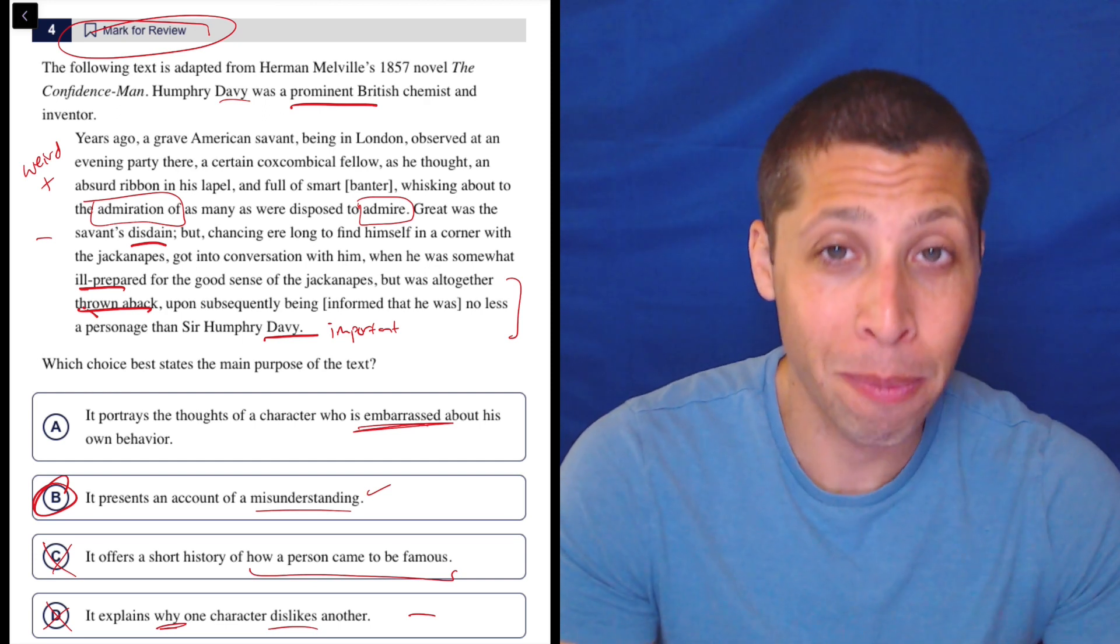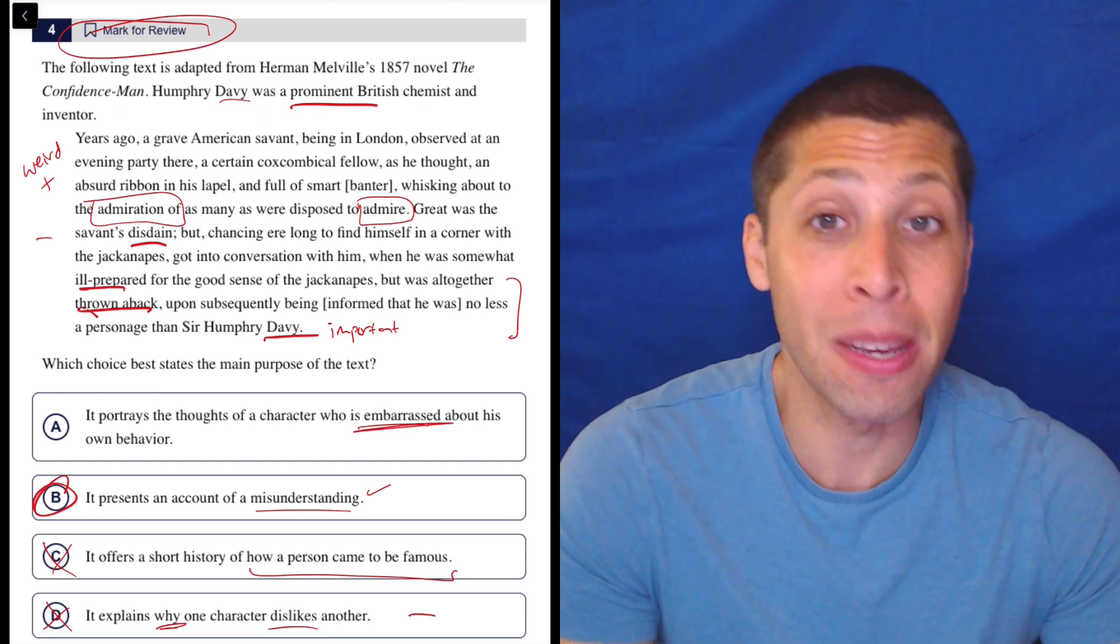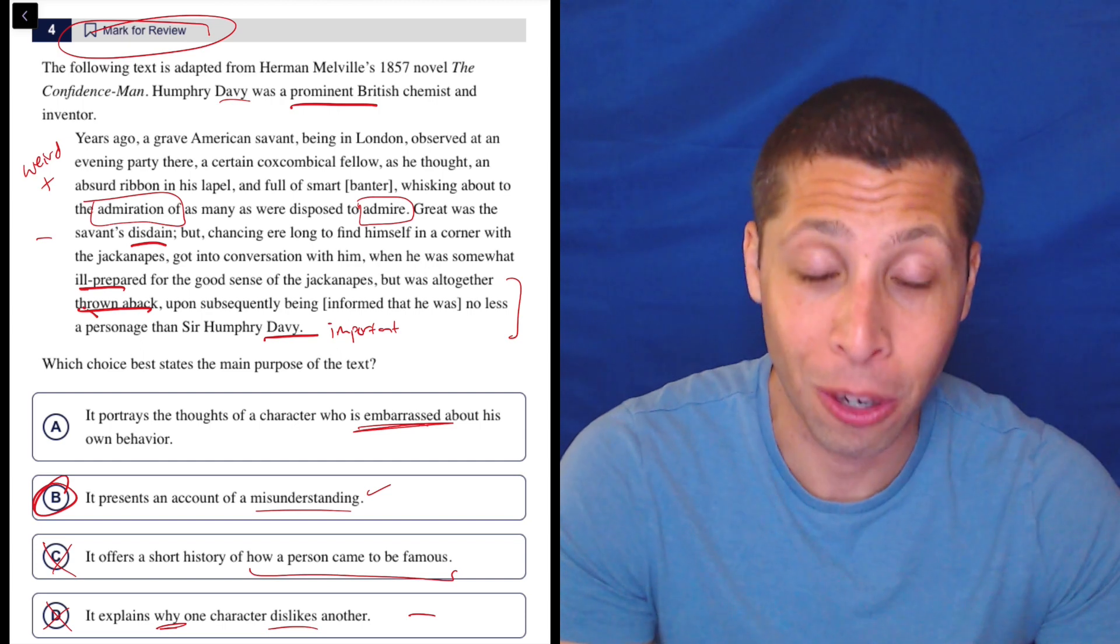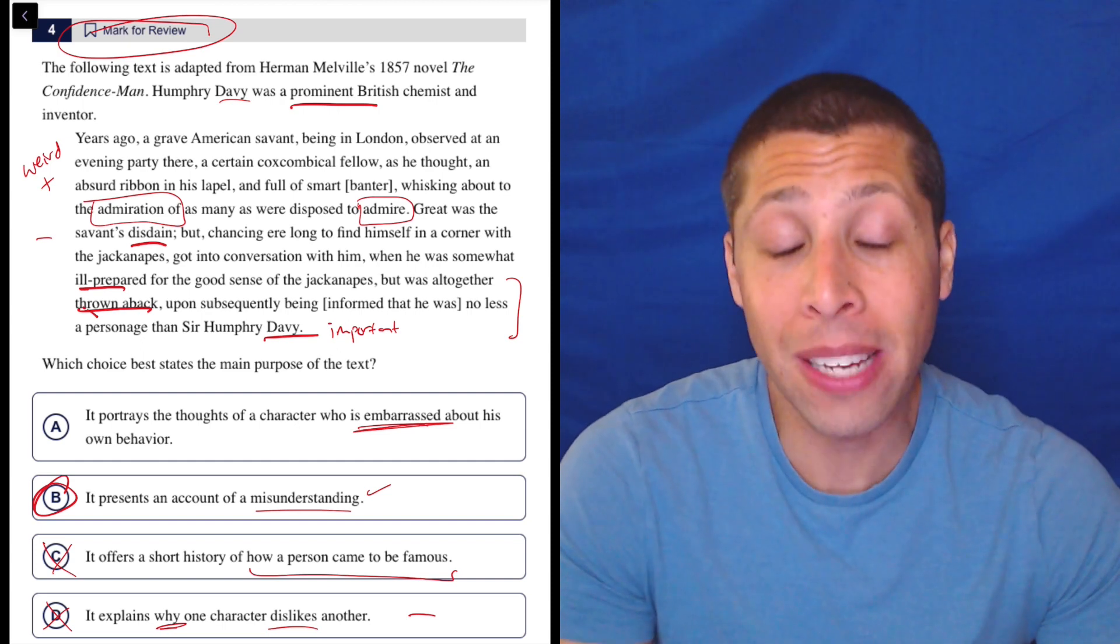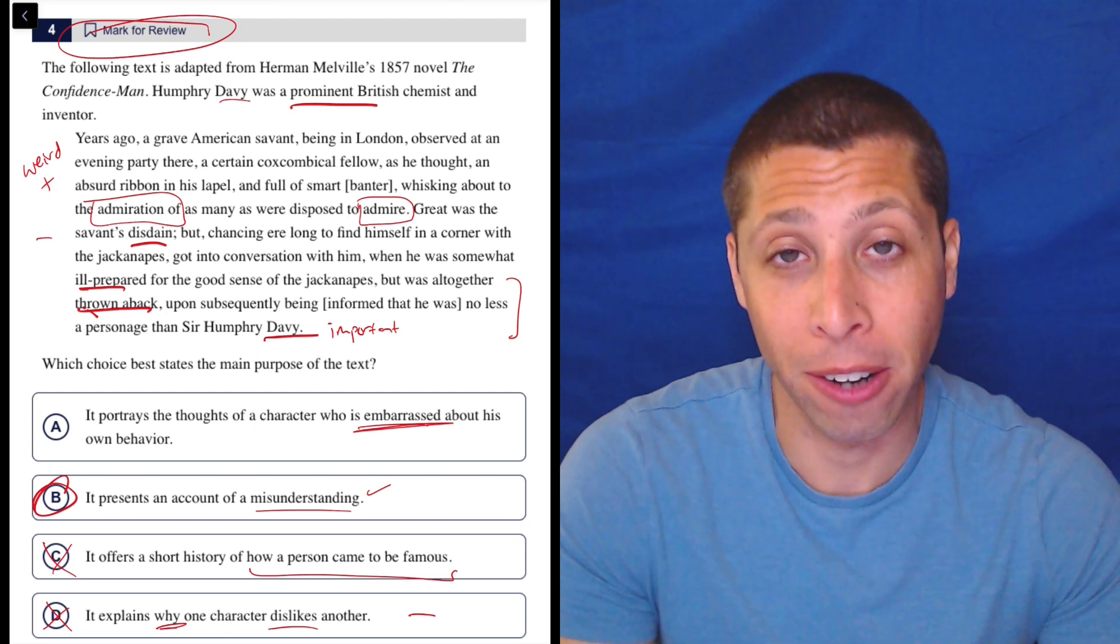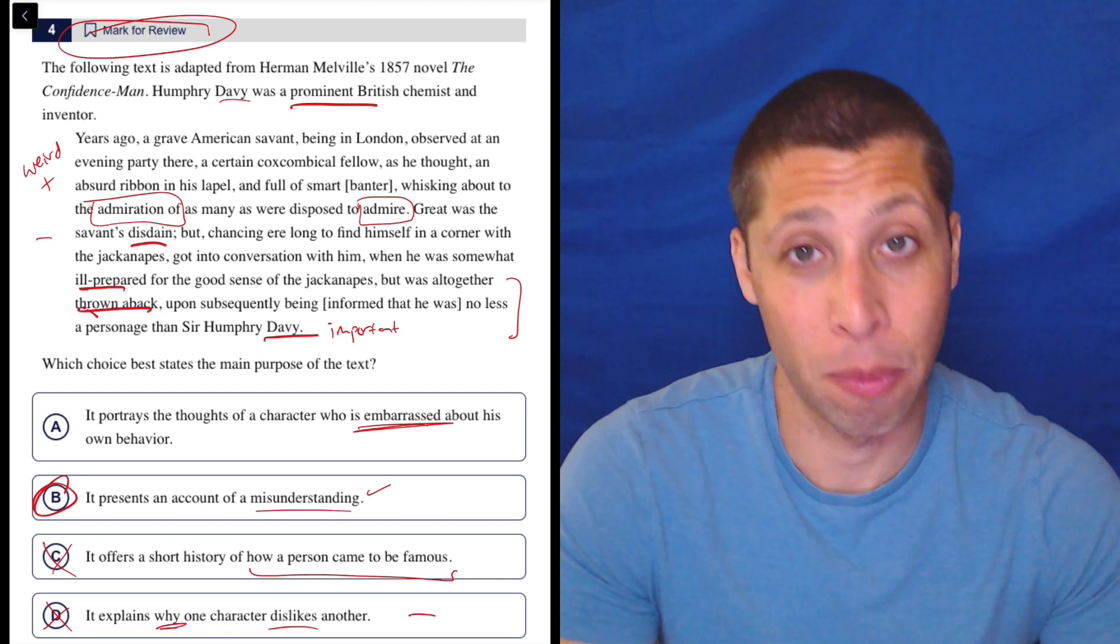A is a little bit stronger. Why is he embarrassed? Well, he's embarrassed because he misunderstood who he's talking to. Reasonable, but not stated. Choice B says the same thing, but without the part of embarrassment. And that's what makes it weaker and that's what makes it correct.